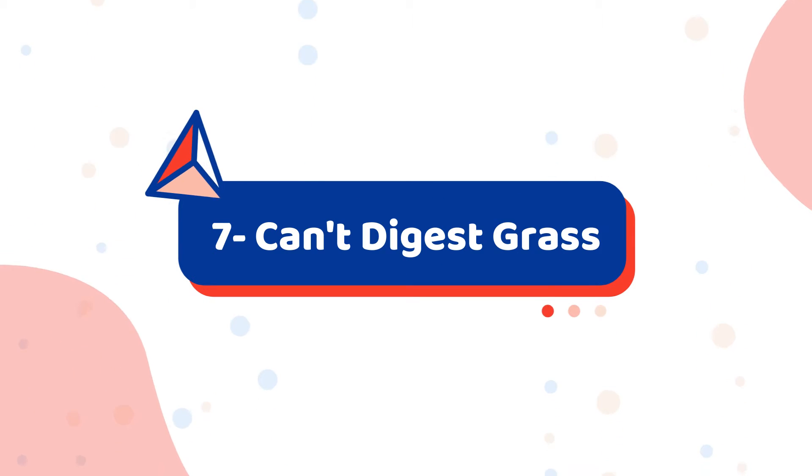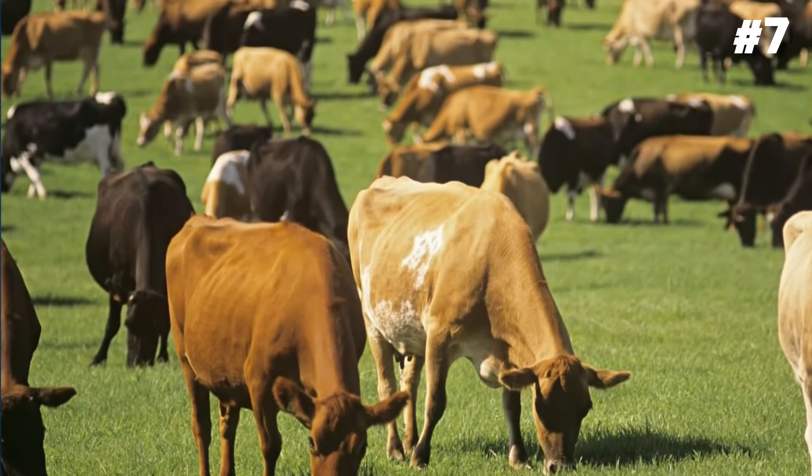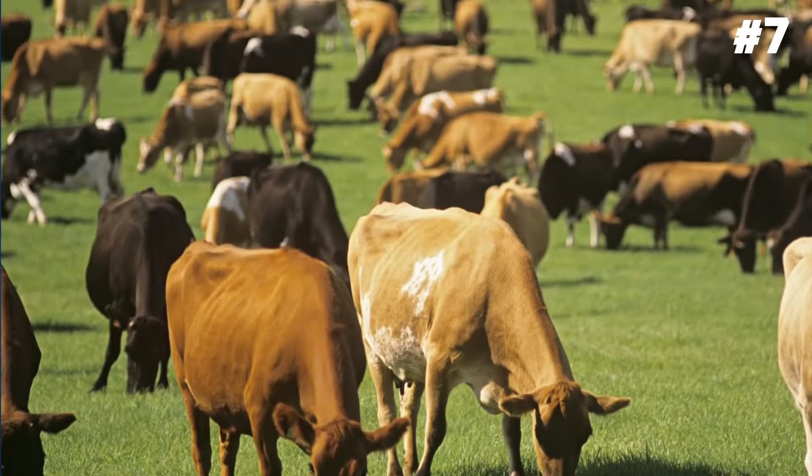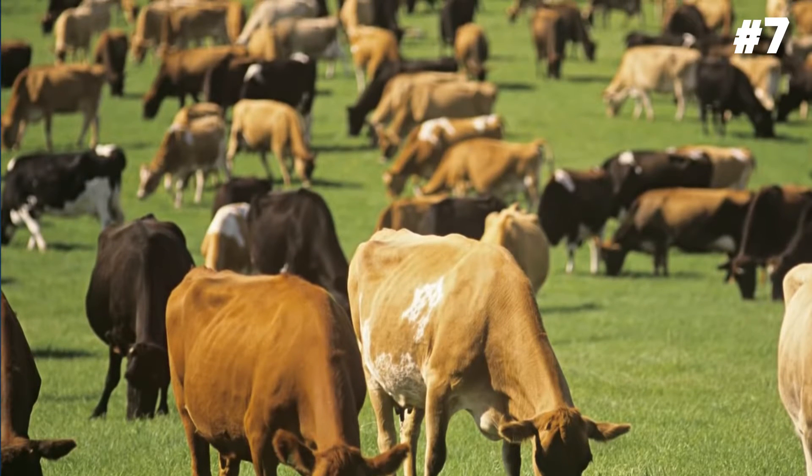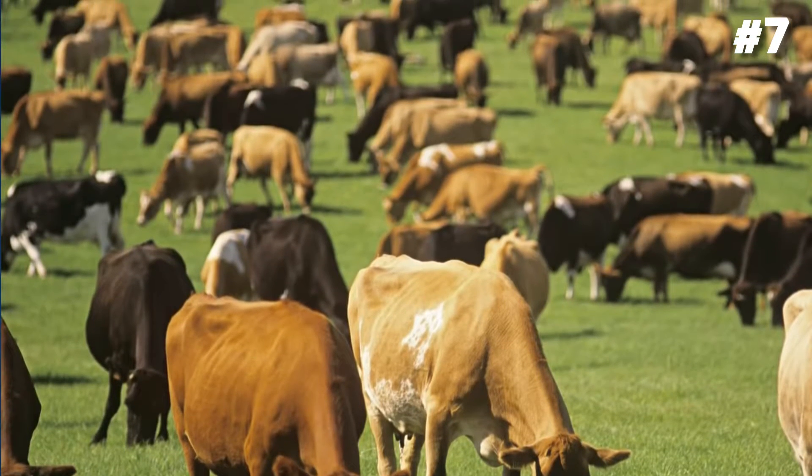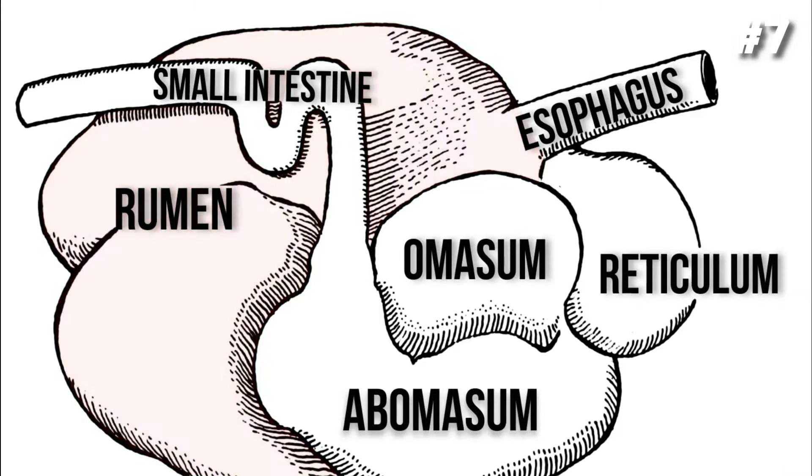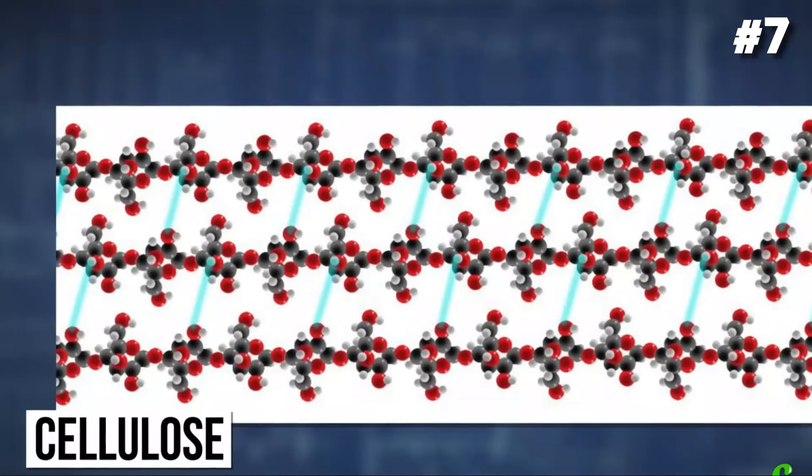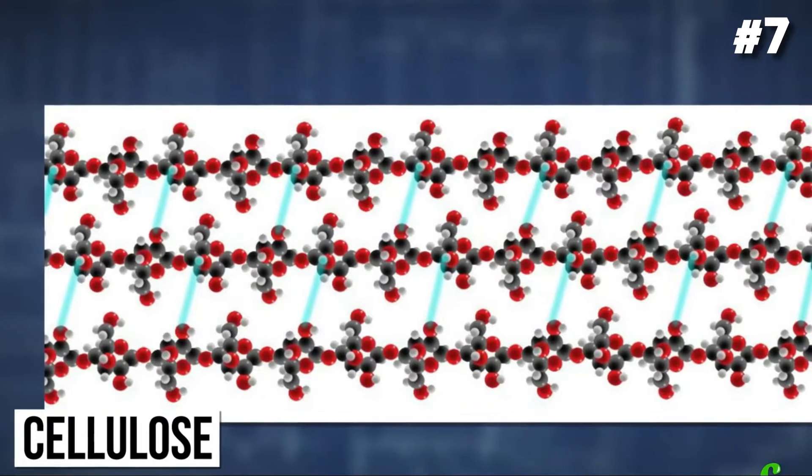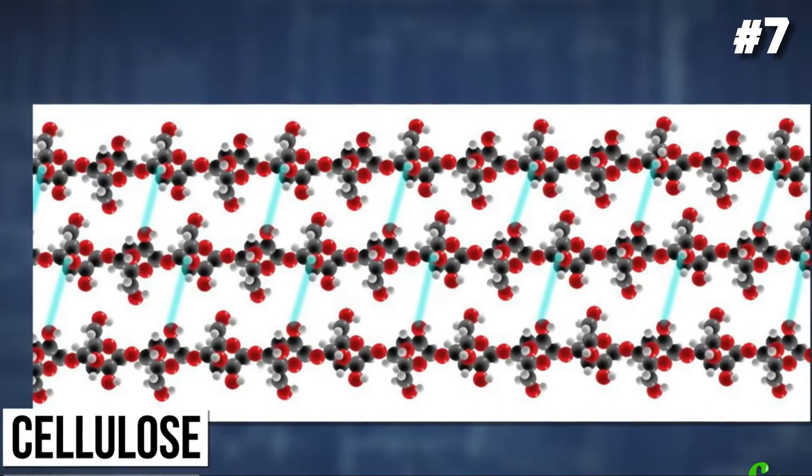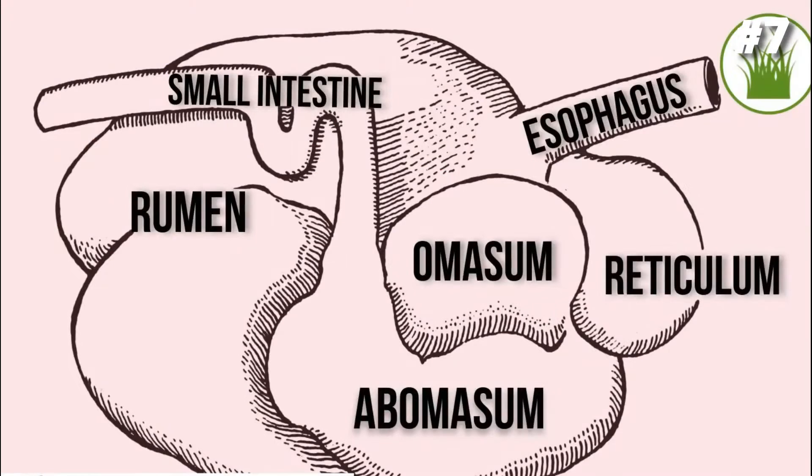Cannot digest grass. Although humans are surrounded by grass in parks and roads, unlike cows, humans can't eat grass. It's mainly because cows have an equipped digestive system to digest cellulose, but humans don't. Cellulose is a complex carbohydrate consisting of long chains of glucose units. It's found in the cell wall of the plant cells.